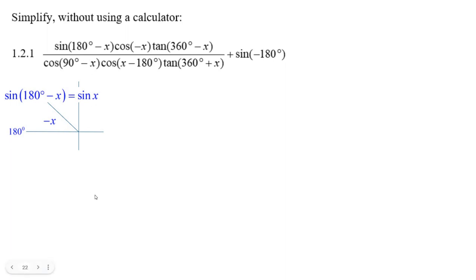And that's it. And the cosine of minus x. Well, that's in the fourth quadrant. So you can rub it out and put cos x. The tangent of 360 minus x. Well, that's in the fourth quadrant.